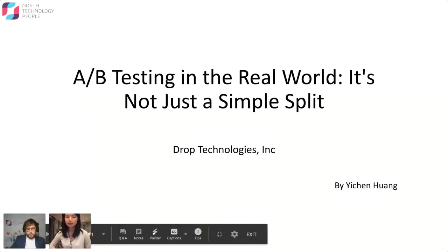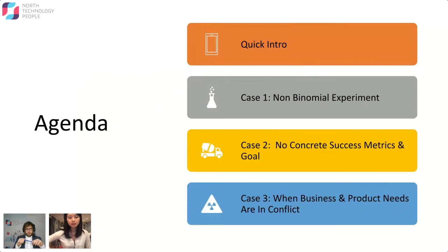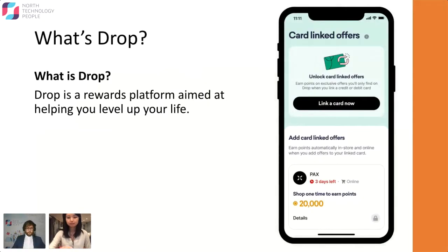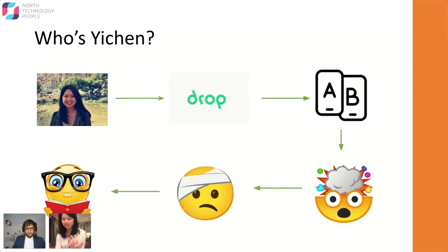Today I'll be talking about A/B testing in the real world and how it's not just a simple split. We'll do a quick intro of Drop and myself first, and then dive into three case studies. Drop is a rewards platform where you earn points for purchases and everyday activities done through the app, which you can redeem for rewards such as gift cards. My name is Yichen — I joined Drop two and a half years ago as the first data analyst, and since then I've done a bunch of A/B tests.